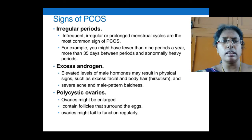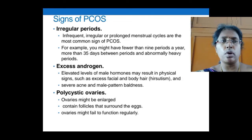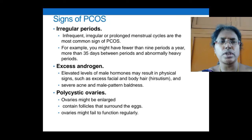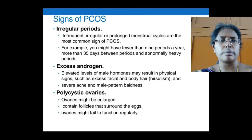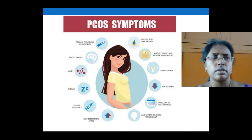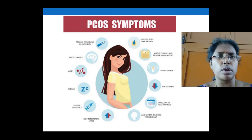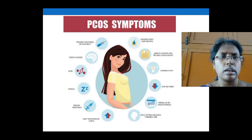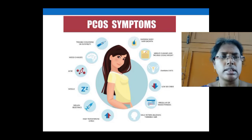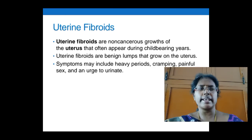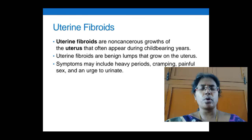The most common signs of PCOS are irregular periods, excess androgen, and polycystic ovaries. High levels of male hormones contribute to excess facial or body hair, acne, and male-pattern baldness. You can also see in this diagram the different effects of PCOS, including defective hair growth, ovarian cysts, and low sex drive.